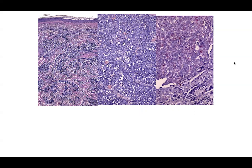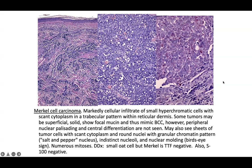Note this really impressive enlarged atypical mitotic figure. This is a Merkel cell carcinoma — markedly cellular with a sheet-like growth pattern in most cases, but it can also show interstitial or trabecular growth patterns.